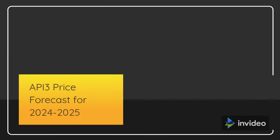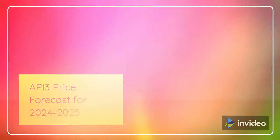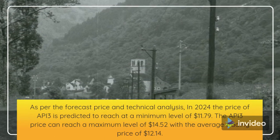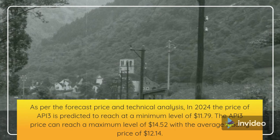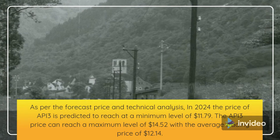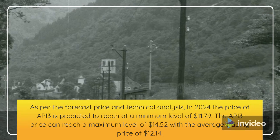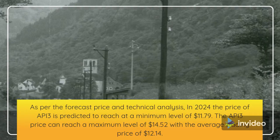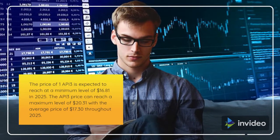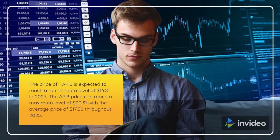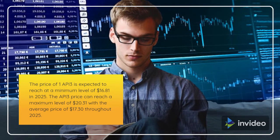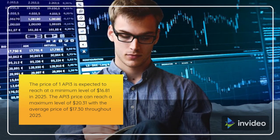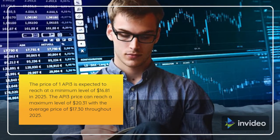API 3 Price Forecast for 2024 to 2025. As per the forecast price and technical analysis, in 2024 the price of API 3 is predicted to reach a minimum level of $11.79. The API 3 price can reach a maximum level of $14.52 with the average trading price of $12.14. The price of one API 3 is expected to reach a minimum level of $16.81 in 2025. The API 3 price can reach a maximum level of $20.31 with the average price of $17.30 throughout 2025.